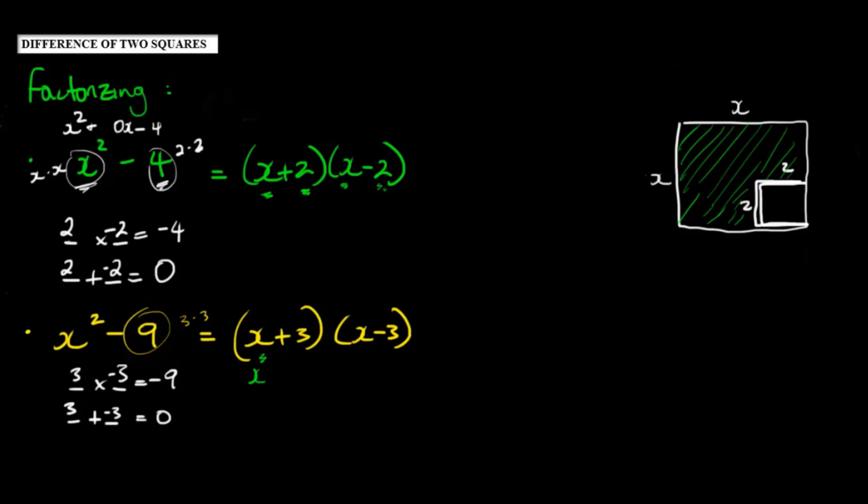It's the same roots. So it's the same numbers, only thing is the difference in the sign. Now we call this property the difference of two squares. It basically says, whenever we factorize two square numbers subtracting each other, or they're at a difference,